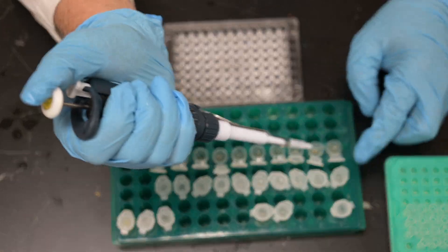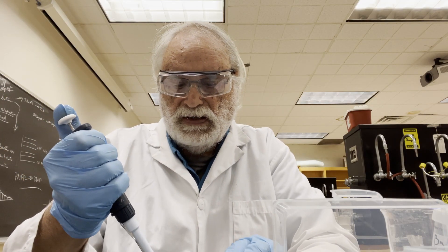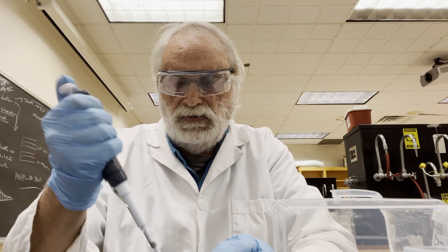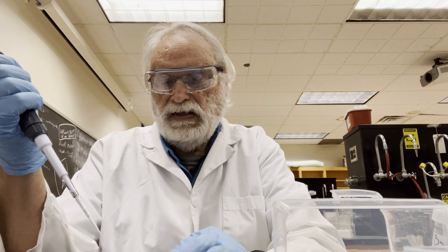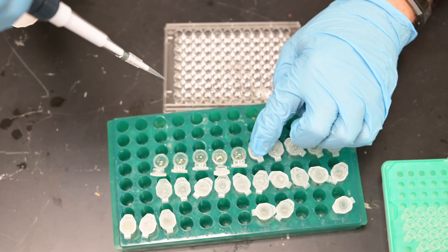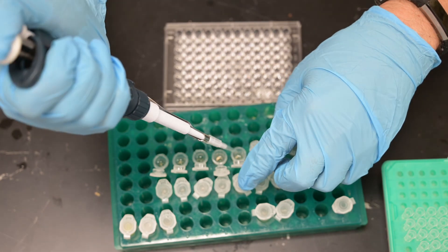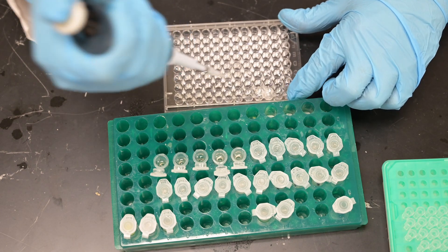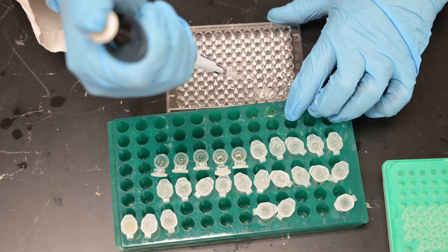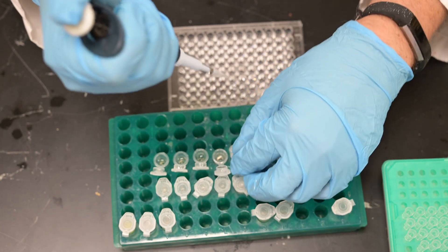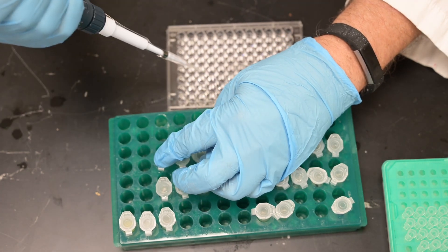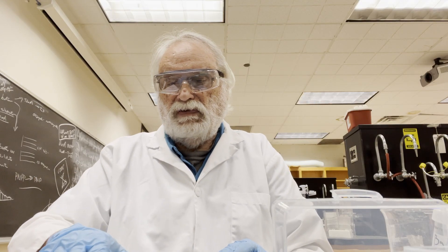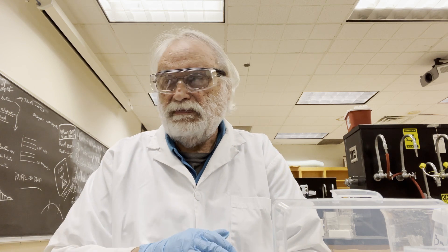Now we have the 0.3 molar fractions: number one goes into C1, number two into C2, through C5. Now all the 0.3 molars are loaded; next we go to the 0.6 molar fractions. Number one goes into C6, number seven, and number ten. So now on this plate we've loaded all the enzyme assay samples.